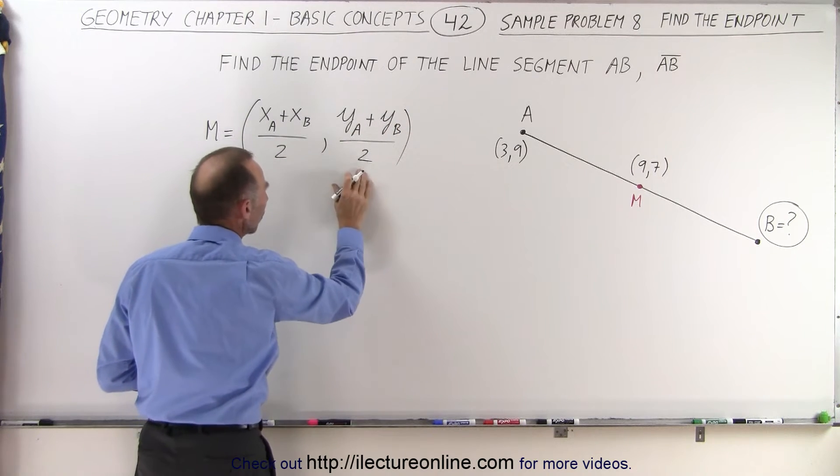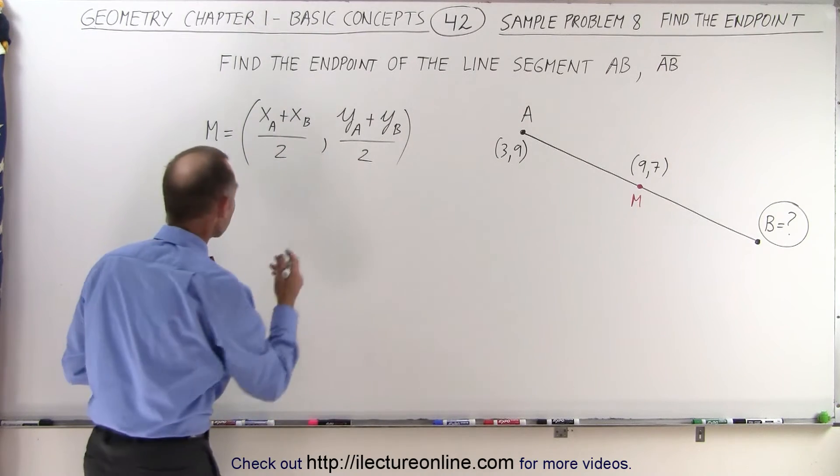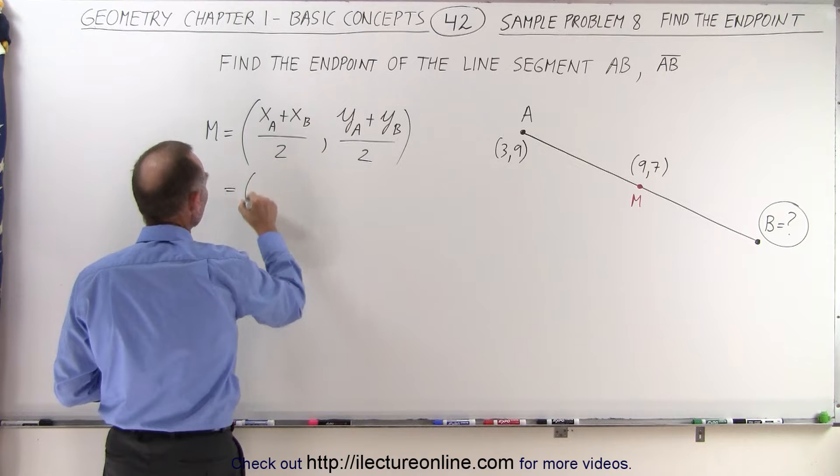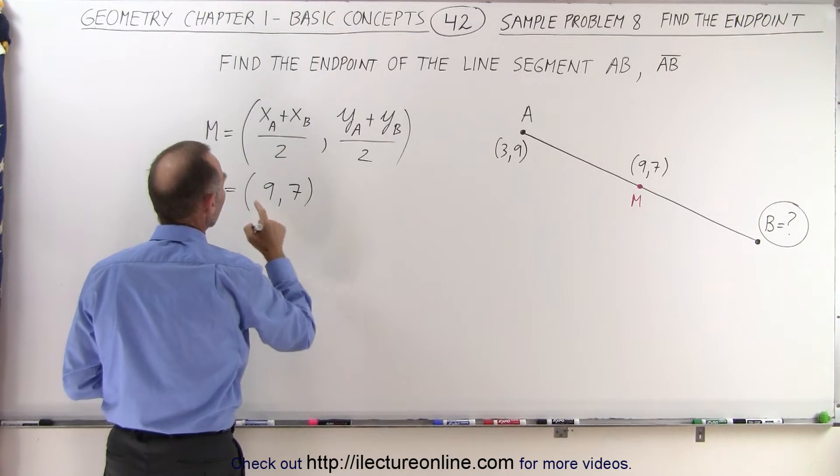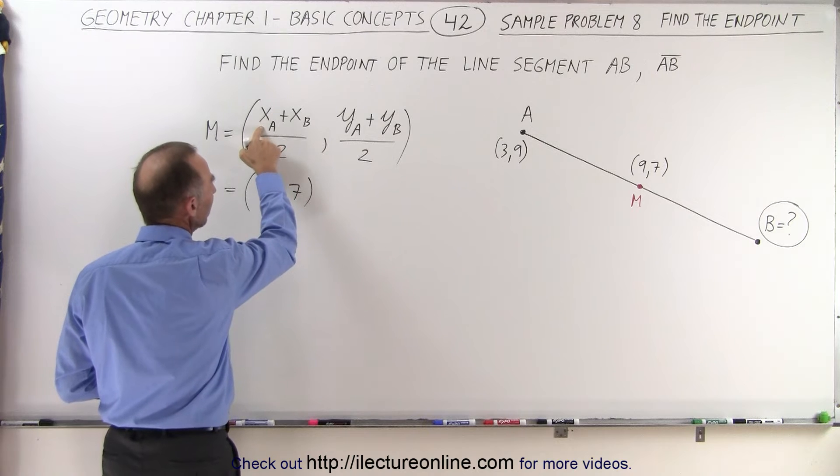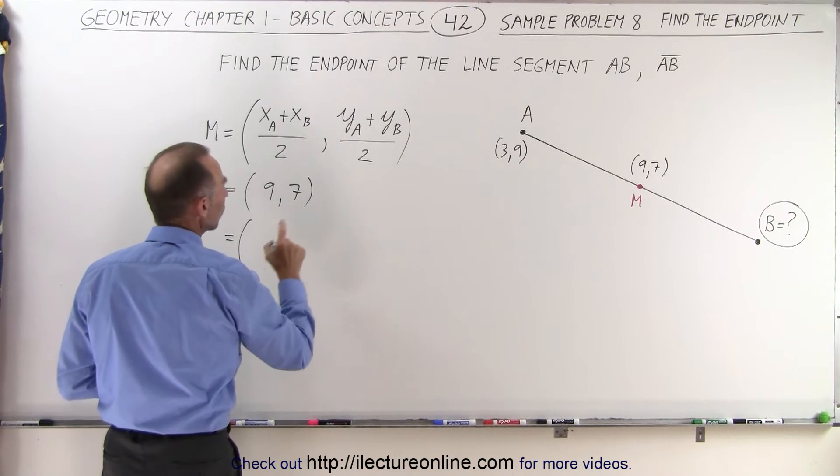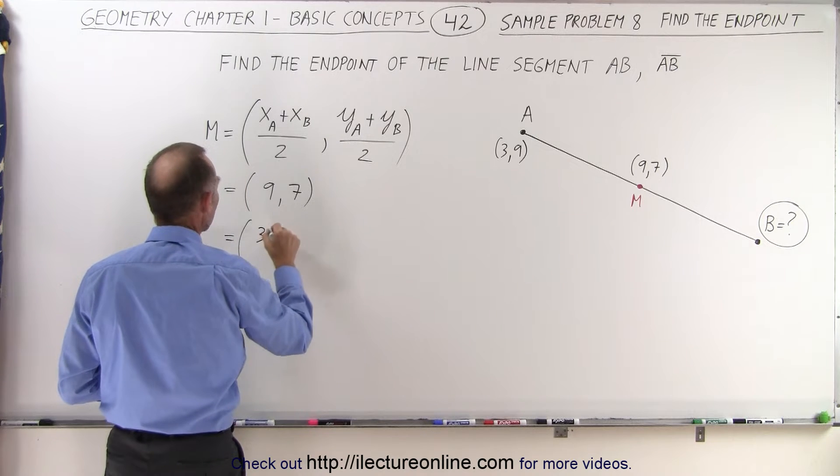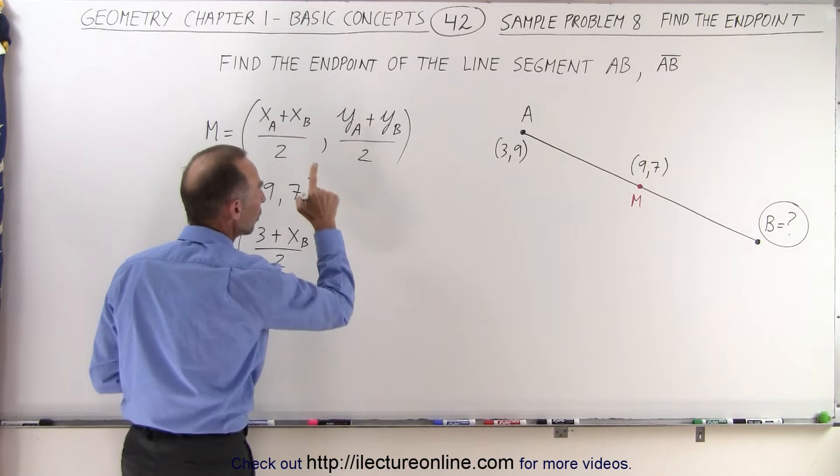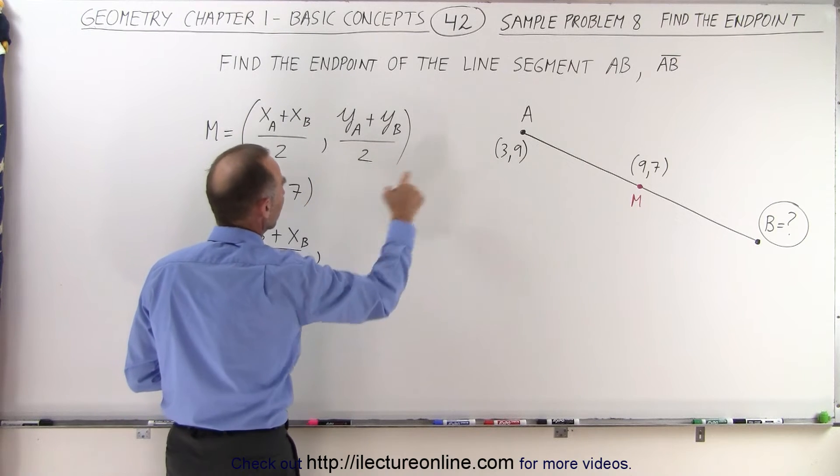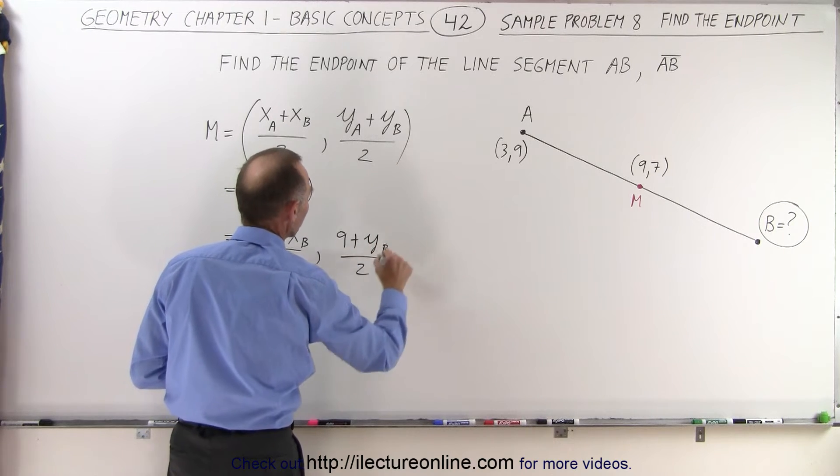So that's how we find the x and y coordinates of the midpoint, which by the way are given. That means that this is equal to 9 and 7. And since we know what x sub a is and we know what y sub a is, we can then say that this is equal to x sub a, which is 3 plus x sub b divided by 2, and we know what y sub a is because that is equal to 9 plus y sub b divided by 2.